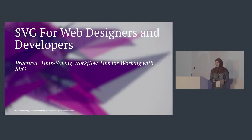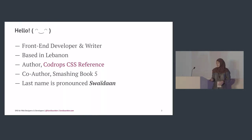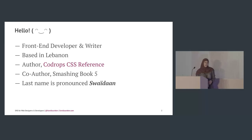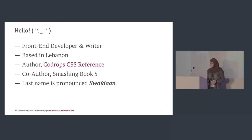Hello. My name is Sarah. Like Oliver said, I'm a freelance frontend developer from Lebanon. I'm also a writer. I write a lot about CSS and SVG mostly. I've written a CSS reference for Code Drops, and I've also recently co-authored the Smashing Book 5 for Smashing Magazine. And my last name is pronounced Swaydan.